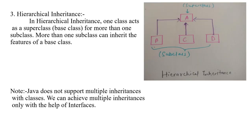The third and last type of inheritance is hierarchical inheritance. In hierarchical inheritance, one class acts as a superclass, i.e. base class, for more than one subclass. More than one subclass can inherit the features of the base class. For example, A is the superclass, and B extends A, meaning B is the subclass of A. Similarly, C and D are also subclasses of A. All three — B, C, and D — inherit the properties of A. This is hierarchical inheritance.